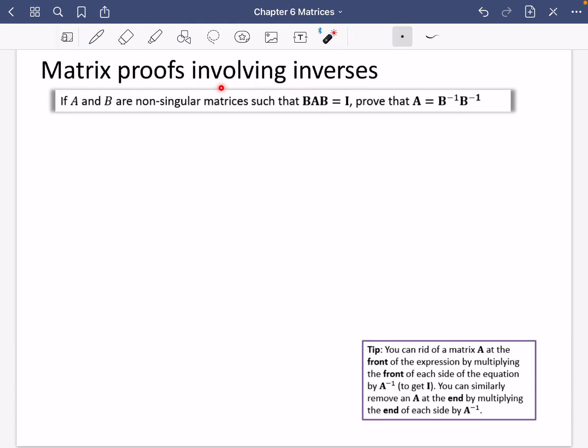Okay, last part for exercise 60 is some matrix proofs involving inverses. These can be really useful to make some questions become a lot simpler. They look complicated, but if you understand what's going on, they're not really too tricky. So let's read what this question says, and we'll see if we can do this together.